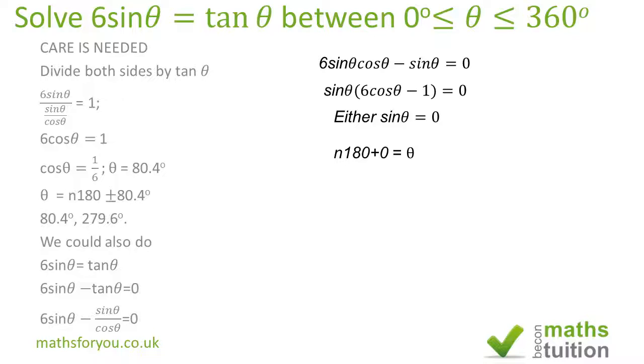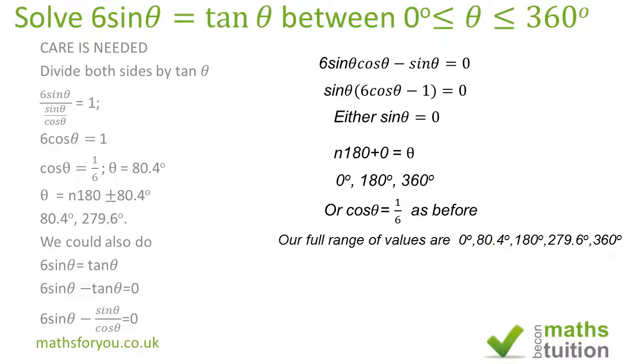If 6cosθ minus 1 equals zero, we end up with cosθ equals one over six as before. This means our full range of values will be 0 degrees, 80.4°, 180 degrees, 279.6 degrees, and 360 degrees.